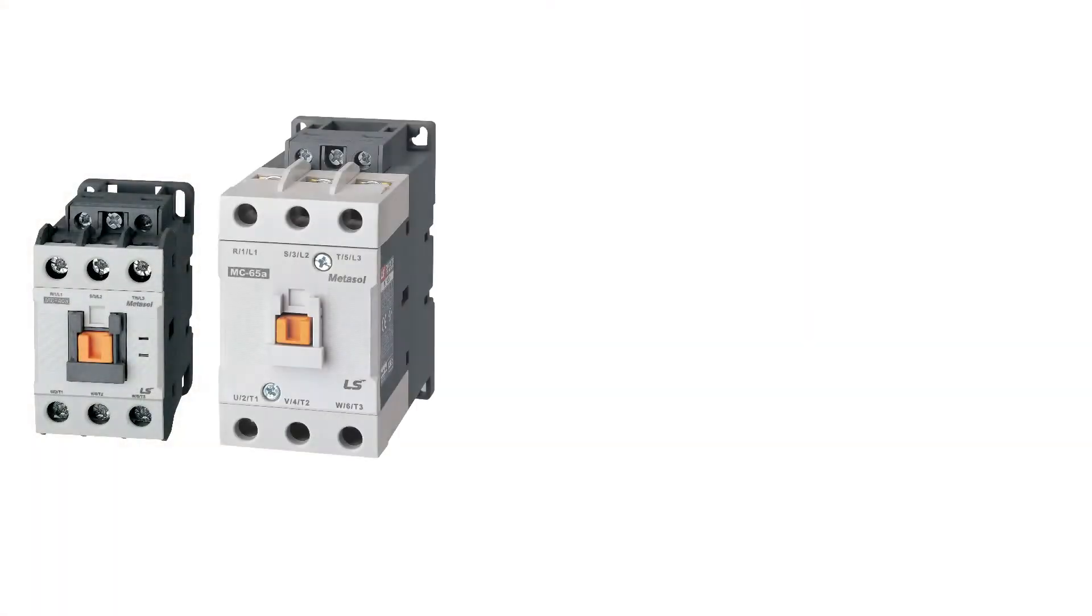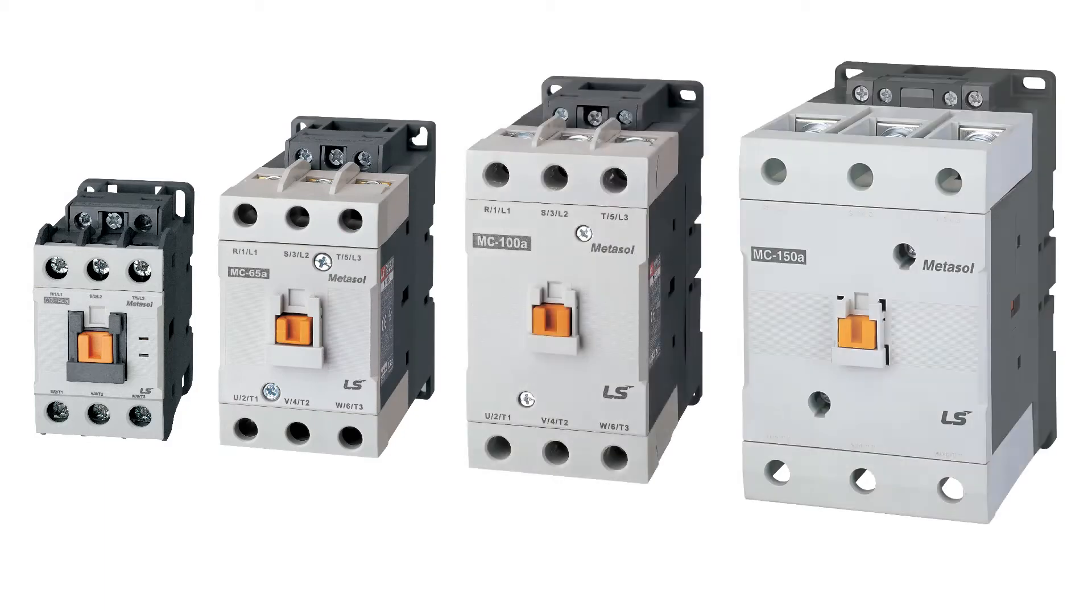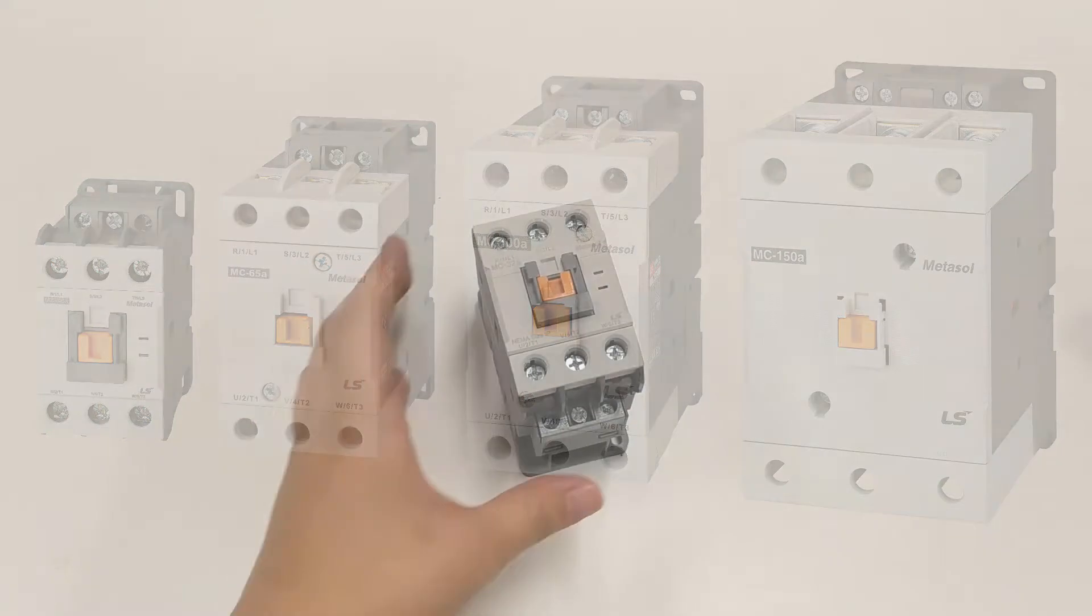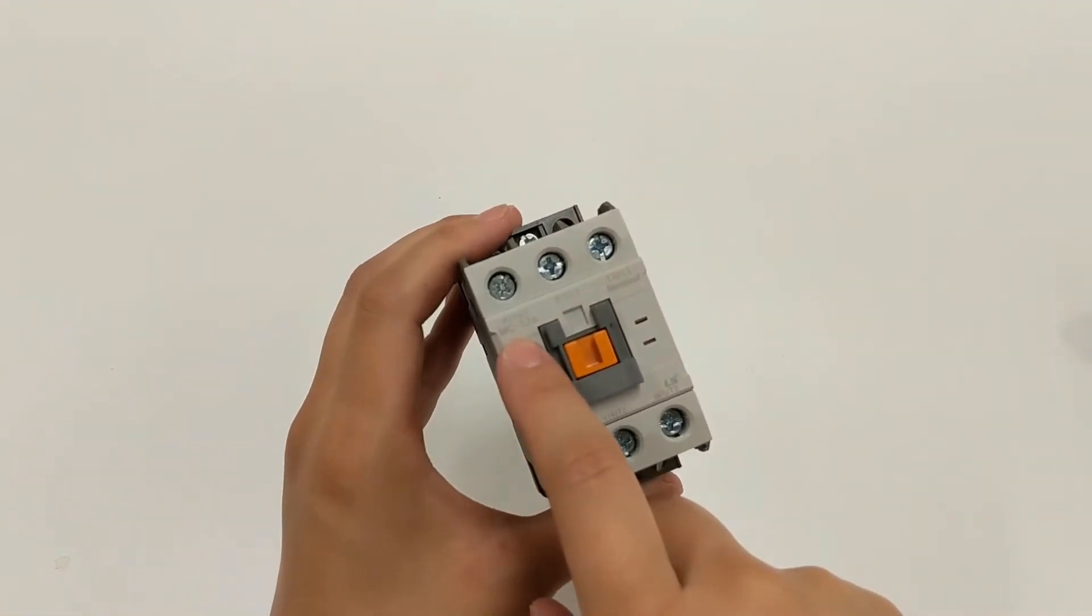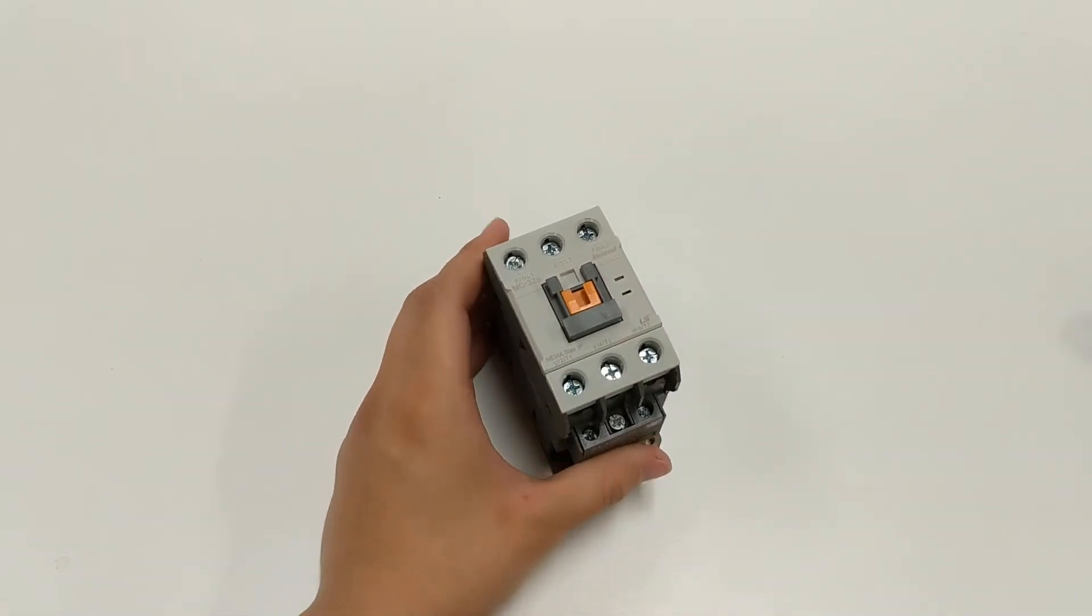For the MC 40M frame to 150M frame contactors, remove the contactor from the box and set on a flat surface. Remove any auxiliary contact units and cut any nameplate labels along the seam of the contactor.